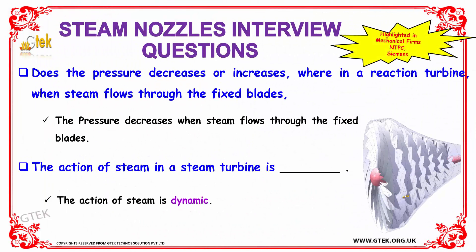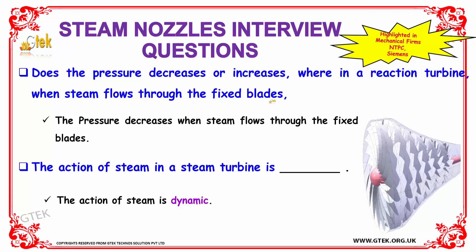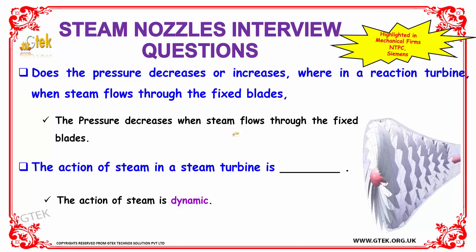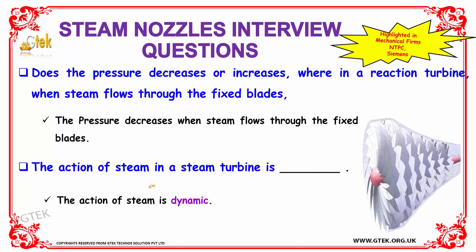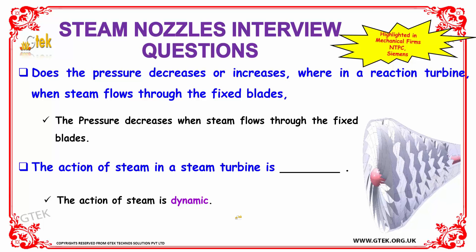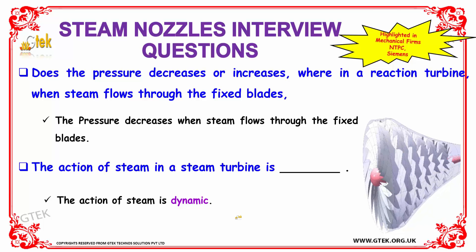Does the pressure decrease or increase when steam flows through the fixed blades in a reaction turbine? The pressure decreases when the steam flows through the fixed blades. The action of steam in a steam turbine is dynamic. These kinds of short and crisp answers are frequently asked in most mechanical firms, NTPC firms, and Siemens.